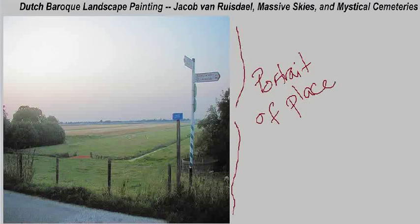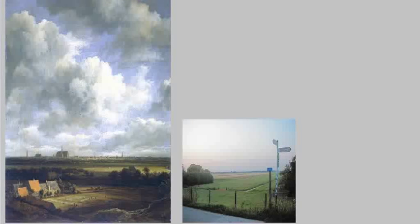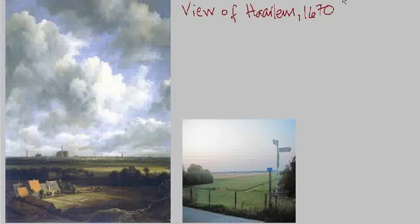Let's take a look at an example of this. The image on the left is known as View of Haarlem, or the Bleaching Grounds near Haarlem, and it dates to 1670, by Jakob van Ruisdael. I have a small image on the right of the photograph we were just looking at, which is of the Dutch countryside. You can see right away a striking similarity between this modern-day photograph and this 17th-century landscape painting. One of the first things you notice when you look at the painting is the sky.